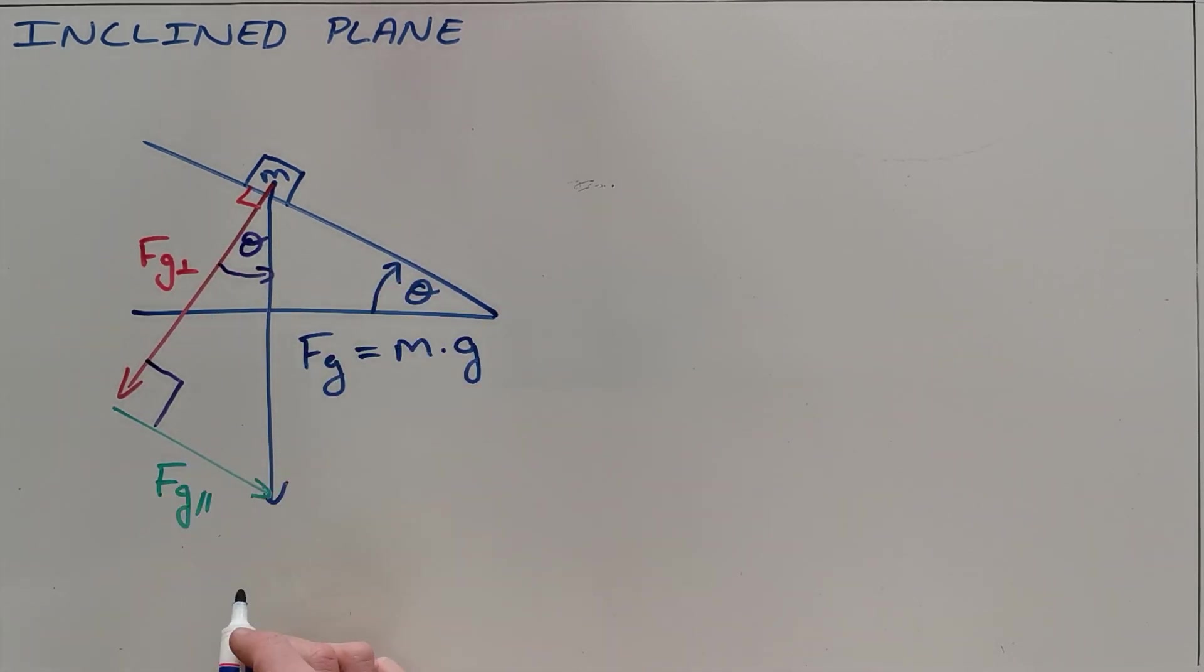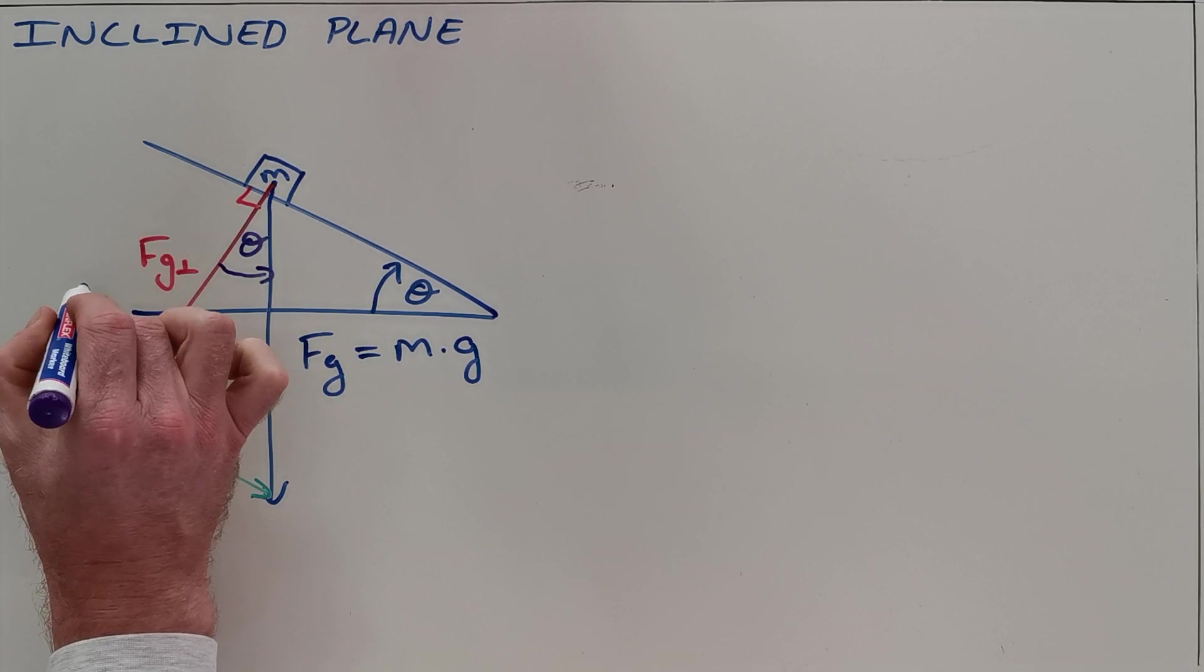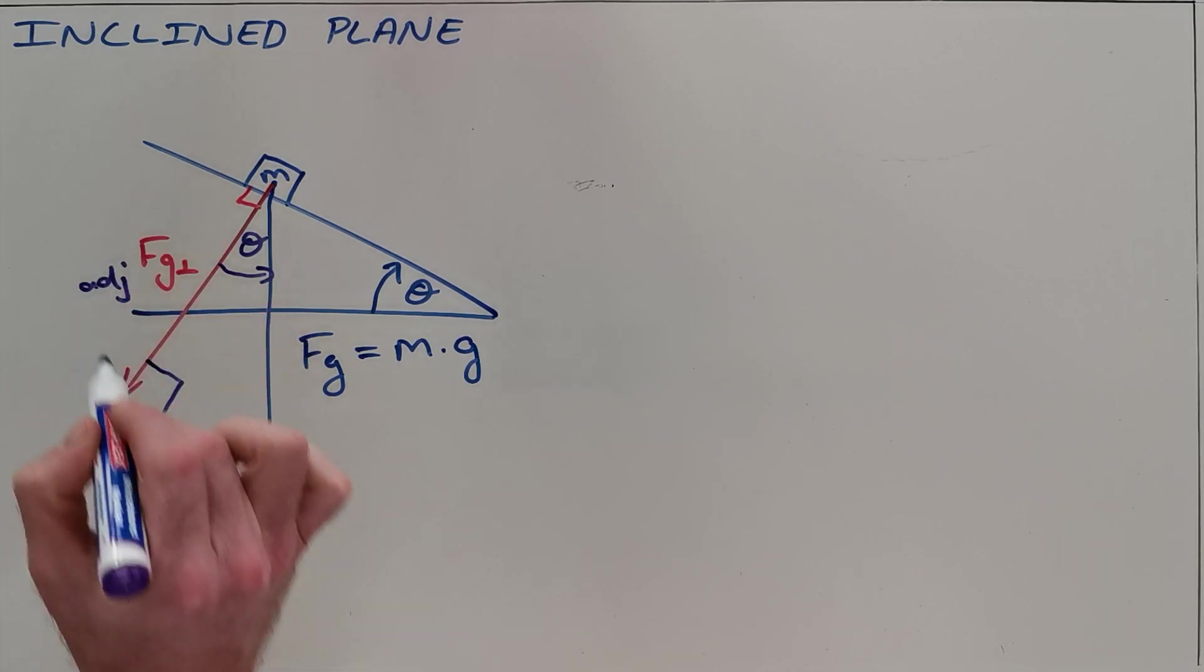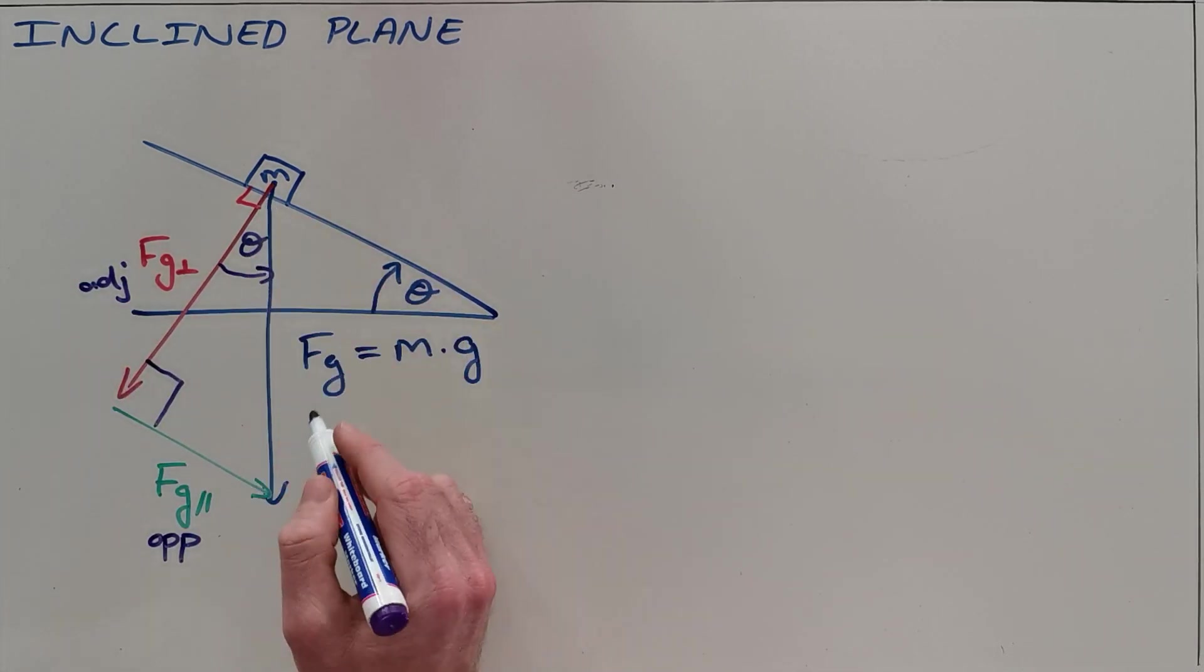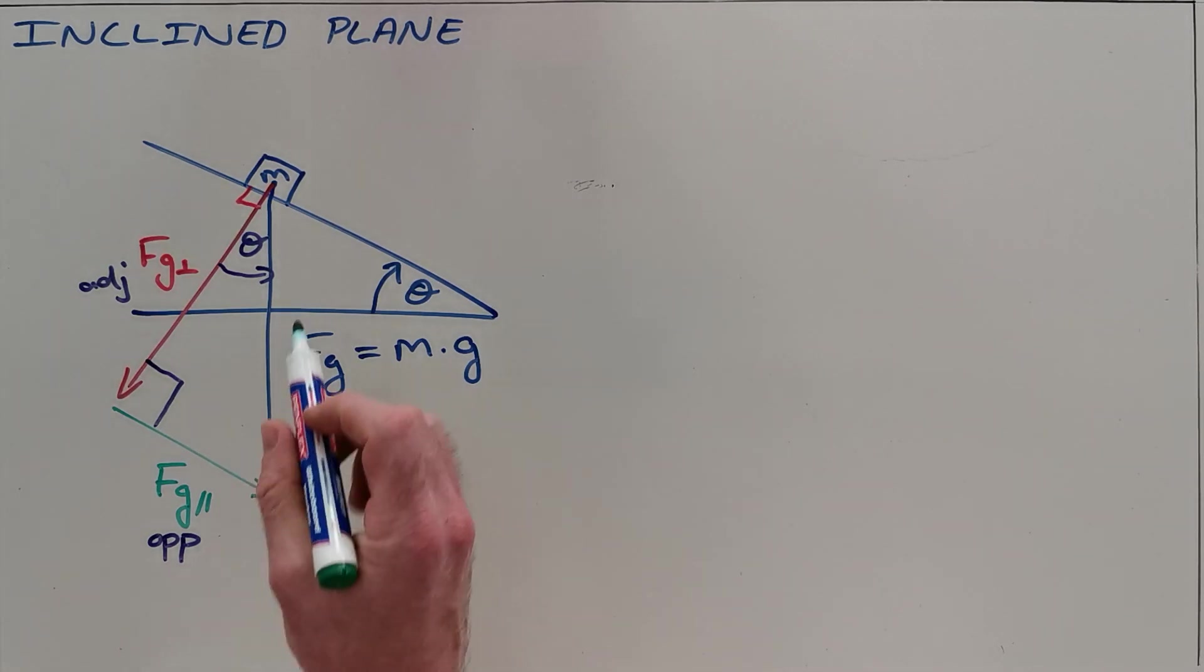And now that we have a right angle triangle we can see that the angle opposite to this is Fg parallel. The angle adjacent to it is Fg perpendicular and the hypotenuse is the original force of gravity. So we can use trigonometry now to find out what the values of each of those components is.